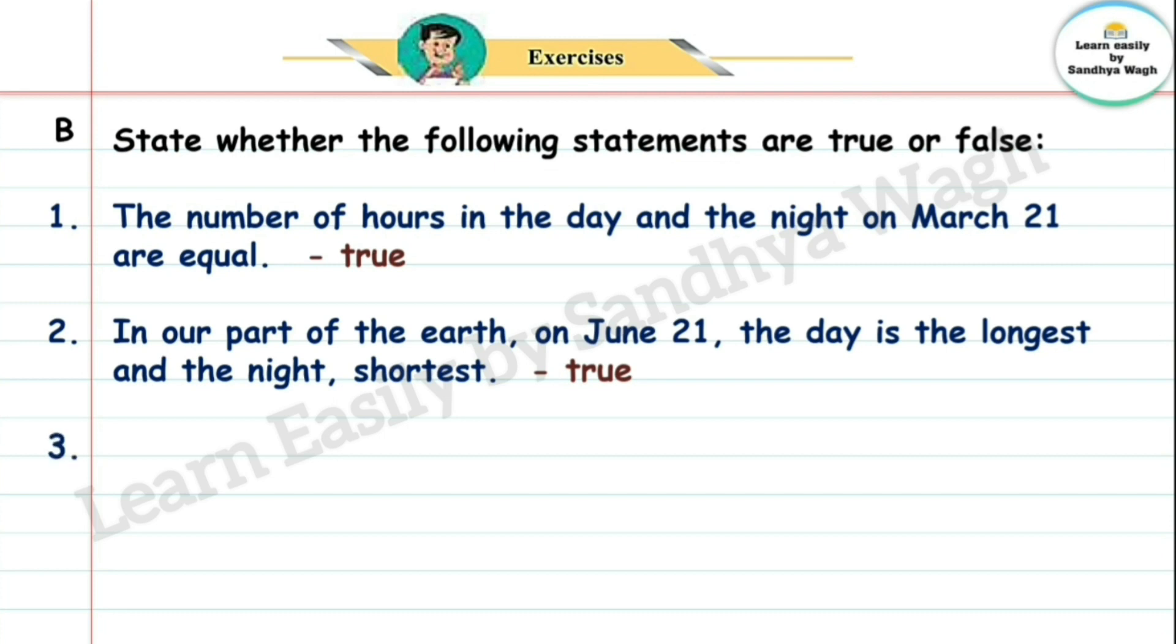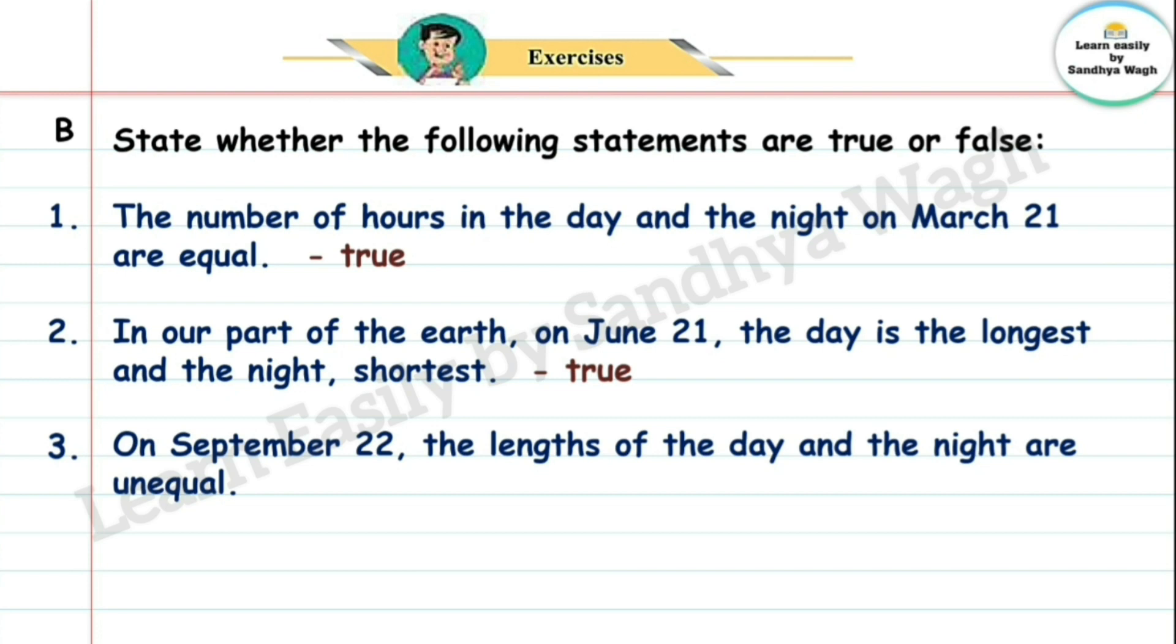3. On September 22, the lengths of the day and the night are unequal. Unequal manjez equalness ne. Sarkhanas ne. 22 September la divas aani ratri ze aars hai sarkhanas that. He sentence correct ahi ki wrong ahi. Wrong ahi. So, false.